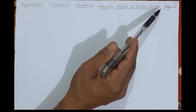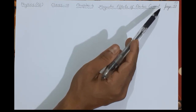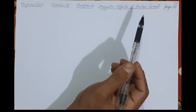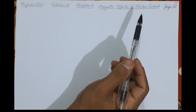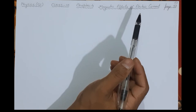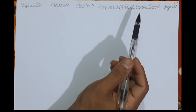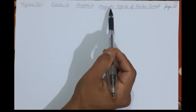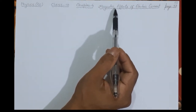Magnetic effects of electric current implies that once you generate electric current, it has some magnetic manifestation of its presence. When electric current is flowing, you will see some magnetic things happening around it. To understand this, we will first understand what a magnet itself is, and then how magnetic-like effects are generated from electricity.